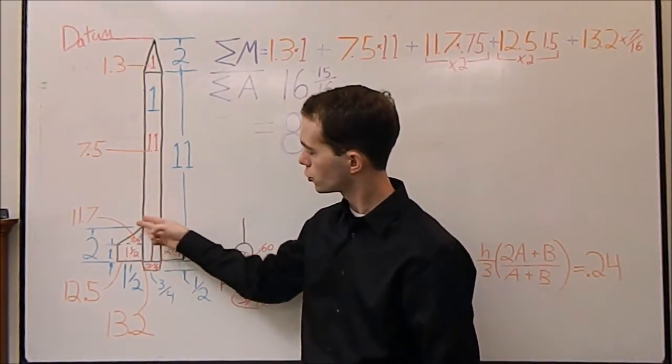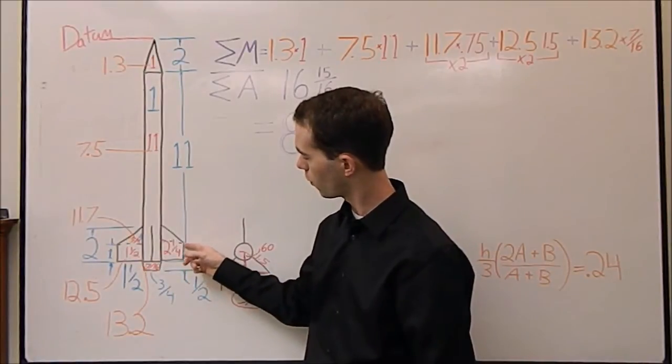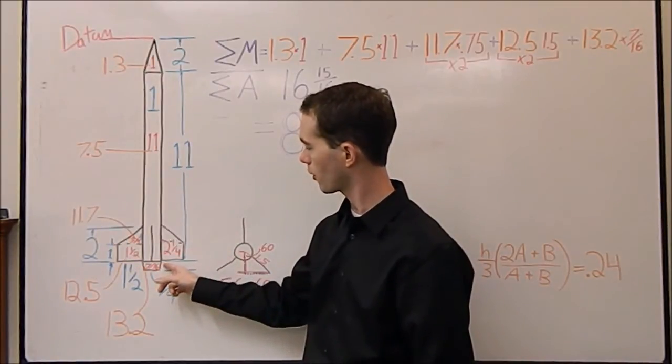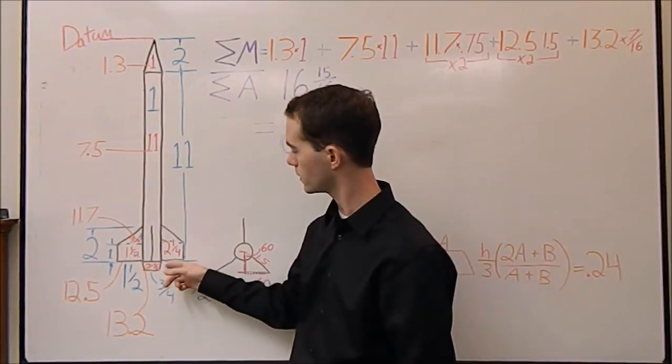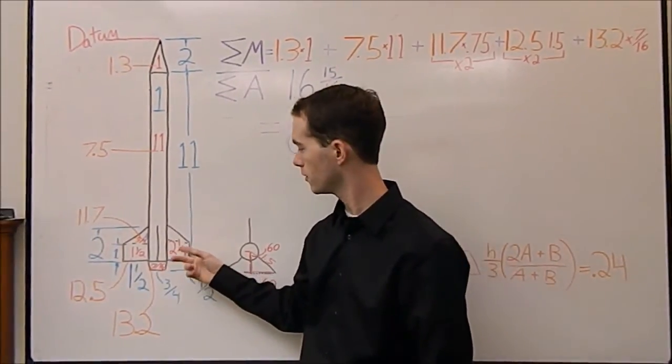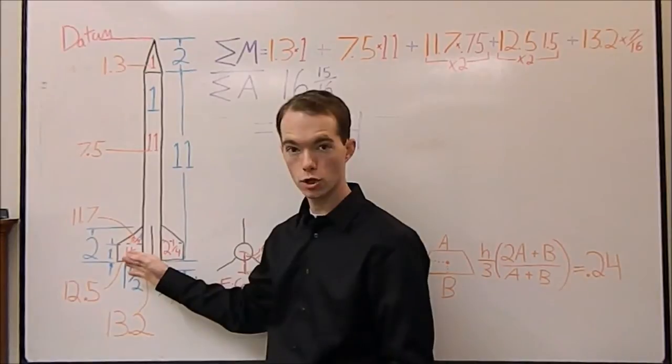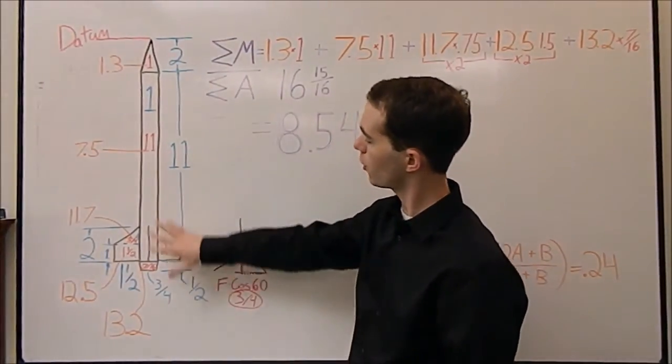And then you've got the fins here which are 2 inches tall. They've got a 1 inch tip and they are an inch and a half in span. So you have 2 and a quarter inches there, square inches I mean, times 2. So you get all your areas.